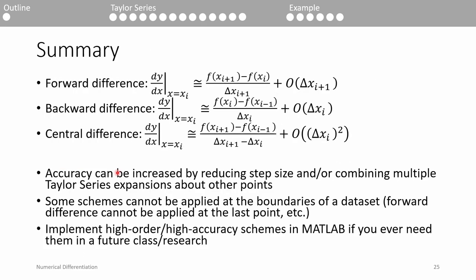And that's about it. To recap, we derived the forward, backward, and central difference schemes. Each scheme requires some data points, and the accuracy of each scheme is contingent upon the data points you use. In general, the central difference tends to be the most accurate of the three. If you want to increase the accuracy of these three baseline schemes, you can reduce the step size and/or redo the Taylor series expansion about other points. When you implement these three schemes, keep the boundaries of the dataset in mind — for example, you can't compute the forward difference at the last data point. Finally, if you ever need to compute high-order or high-accuracy derivatives, you're probably better off using validated functions like diffxy. This video was pretty theoretical, but the upcoming videos will feature more number crunching and a better glimpse of implementing these differentiation methods. See you next time.